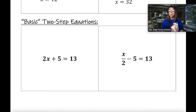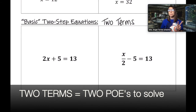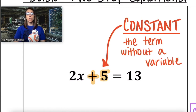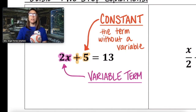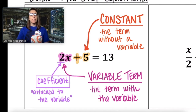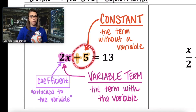In a basic two-step equation, you're looking at an equation that has two terms on one side of the equal sign. Since it has two terms, we're going to end up using two properties of equality. The first term to identify is called the constant — the term that does not have a variable. In this case, our constant is positive 5. The next term is the variable term, which is the one that has the variable — here, 2x. In the variable term, look for the coefficient, which is the number attached to the variable. So this equation has constant positive 5, variable term 2x, and coefficient 2.